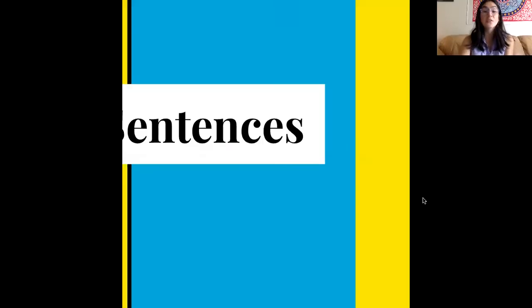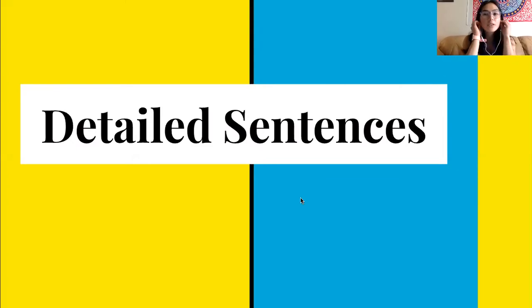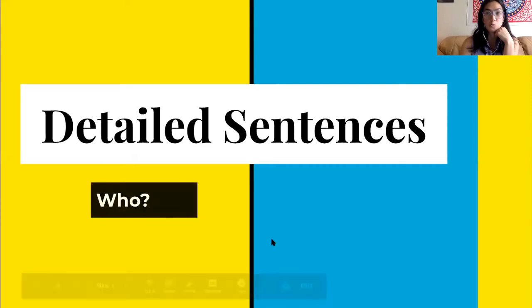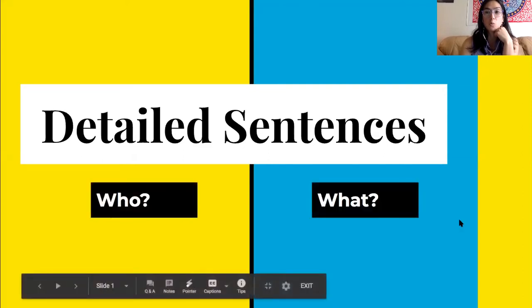So when we write detailed sentences, the first thing that we have to do is make sure to have a who, a what, a where, and a when.